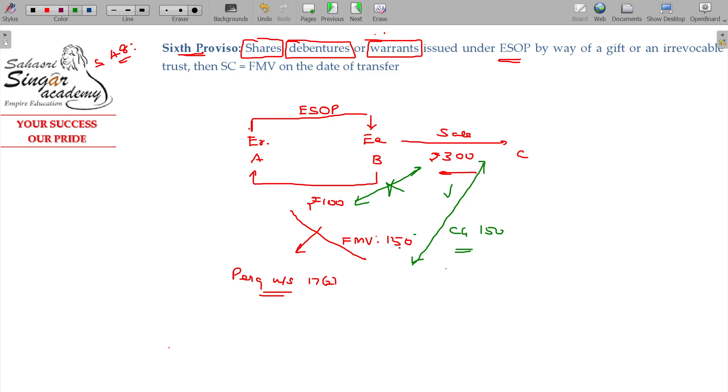So the cost of acquisition of the shares allotted under the ESOP is equal to fair market value on the date of allotment, not the real cost he paid. Actual cost paid will not be taken.